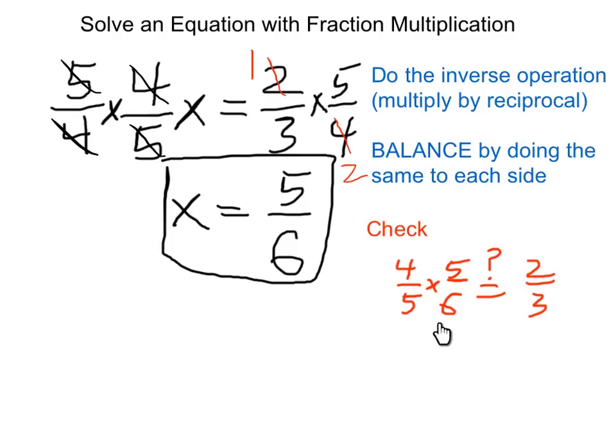So here's how I might set up the check. Does 4 fifths times 5 sixths equal 2 thirds? And a little bit of quick canceling confirms that it's true.